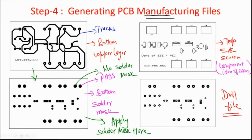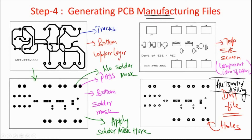The last file is the drill file, necessary for putting holes in the pads. For manual drilling this isn't required, but in large-scale manufacturing a CNC machine uses the X and Y coordinates from the drill file to automatically position the drill bit and drill holes. For high-volume production, automated drilling is essential.